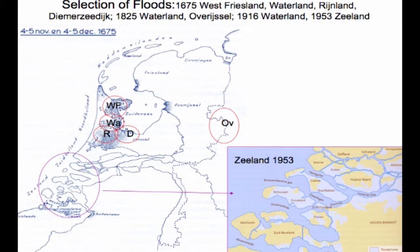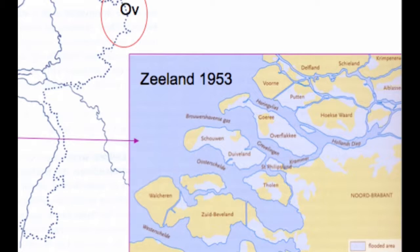1953 is the flood we might know because it also flooded parts of England, and it was one of the largest disasters of the 20th century, at least in this region. It cost 2,000 people their lives — 2,000 casualties.